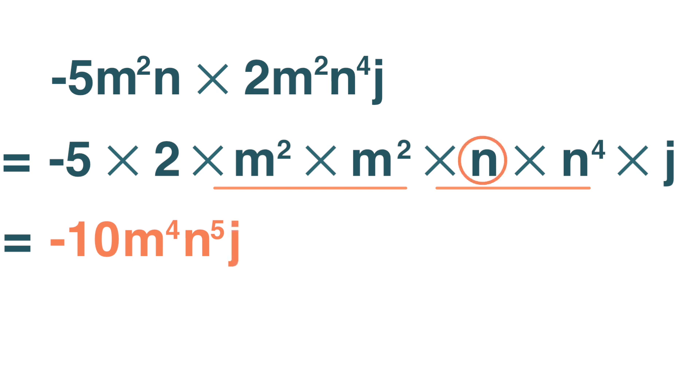Note that n is actually n to the power of 1. If you still remember from previous chapter, n to the power of 3 is n times n times n. n to the power of 2 is n times n. So, n to the power of 1 is just n.